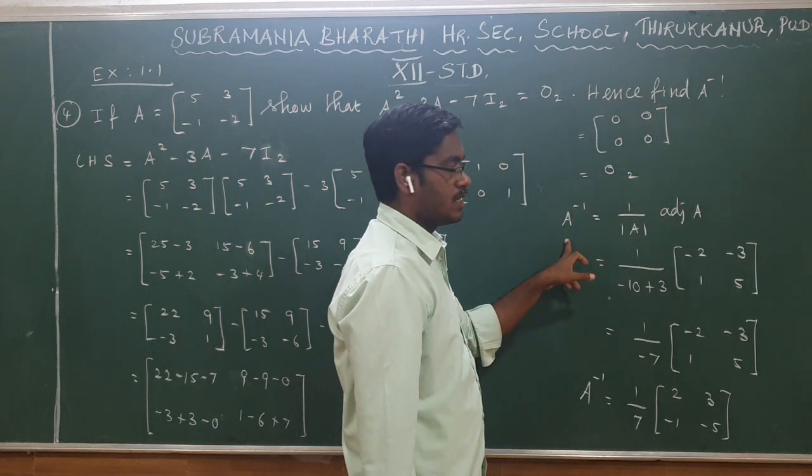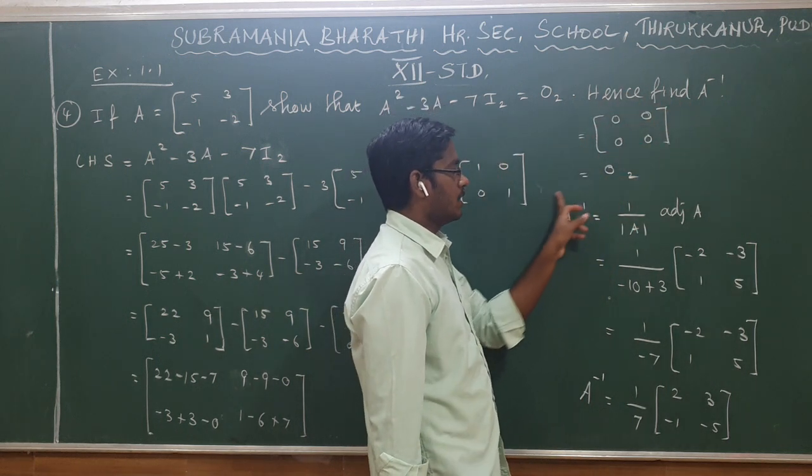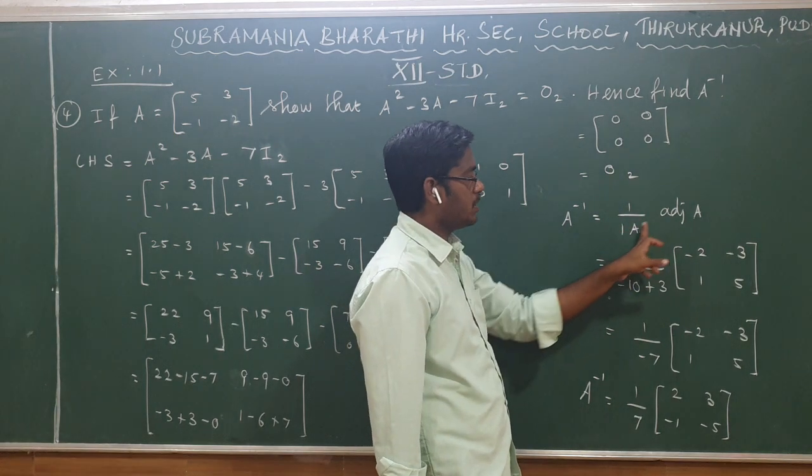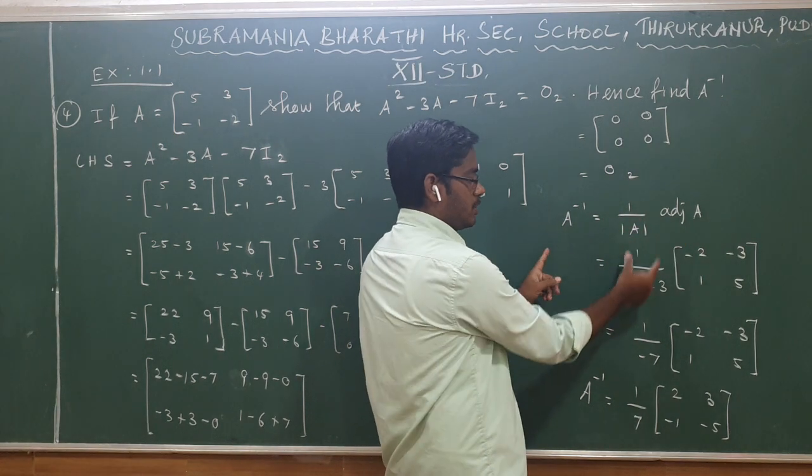A inverse. The formula for A inverse is: 1 divided by the determinant of A, multiplied by the adjoint of A.